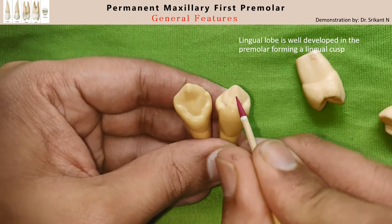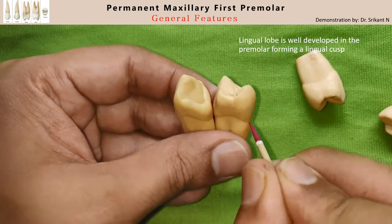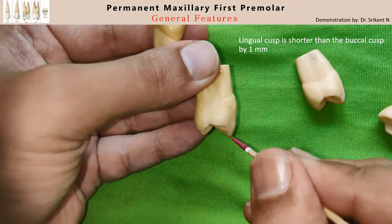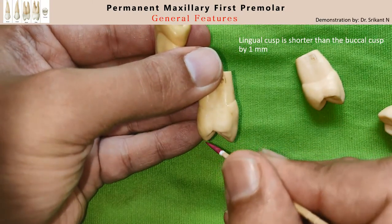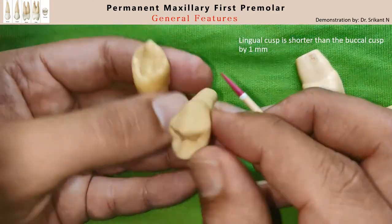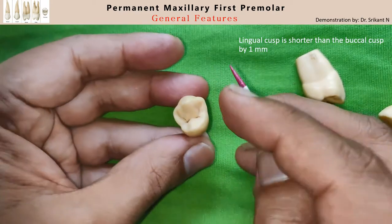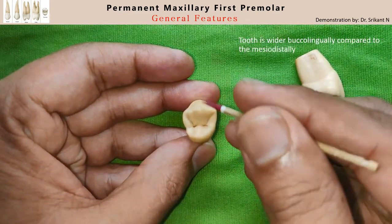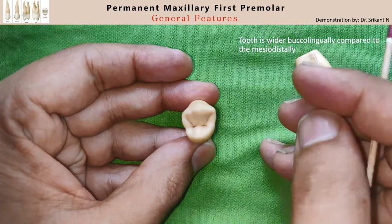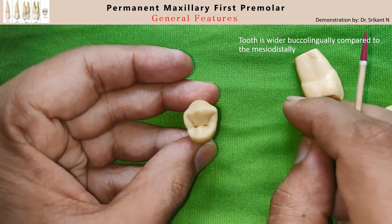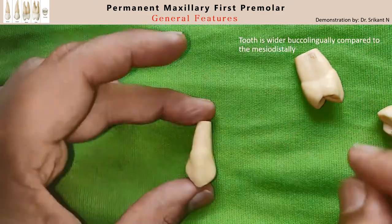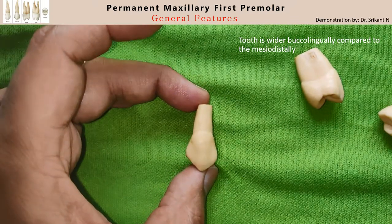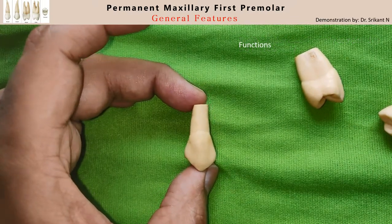The lingual lobe is much more well developed to form the lingual cusp. This lingual cusp is slightly smaller than the buccal cusp — maybe a millimeter shorter. This tooth very typically has a wider buccolingual dimension than that of the mesiodistal dimension.